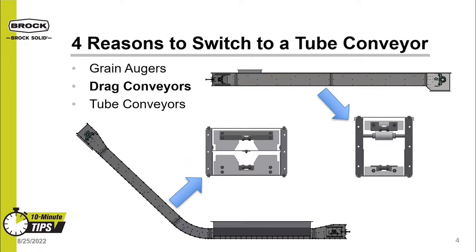These conveyors can typically only use 50% of the box for moving grain. Thus, these conveyors tend to be a higher cost than a traditional drag conveyor because the box size required is larger to move the same amount of grain.